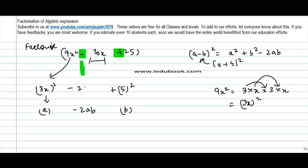So minus 2 into a, which is 3x into b, 5. Now let's check if this qualifies and is equal to 30x. Let's see.